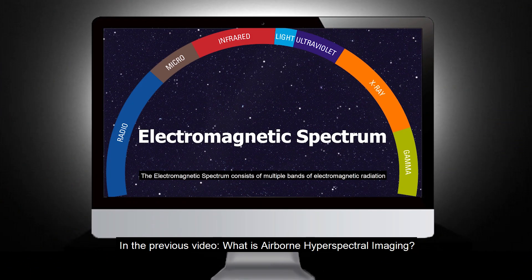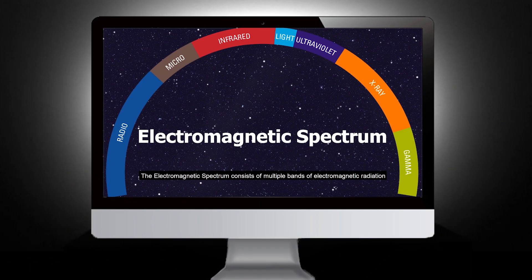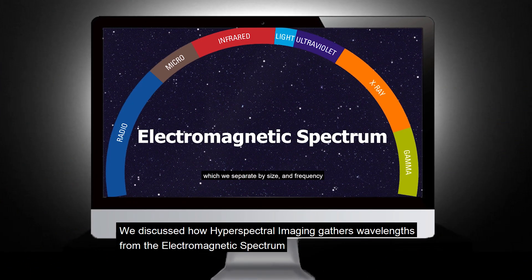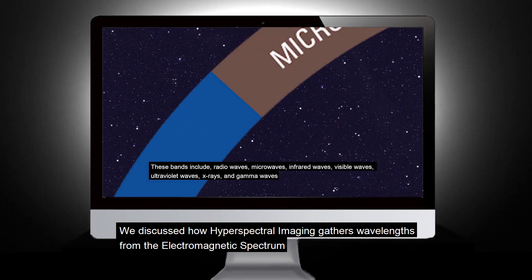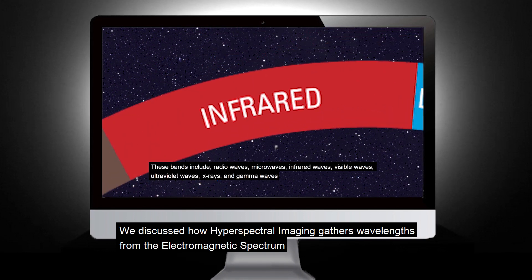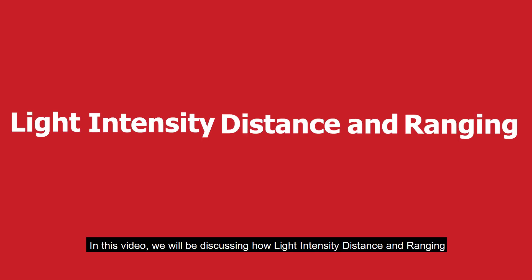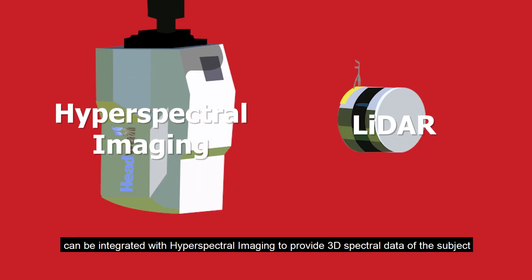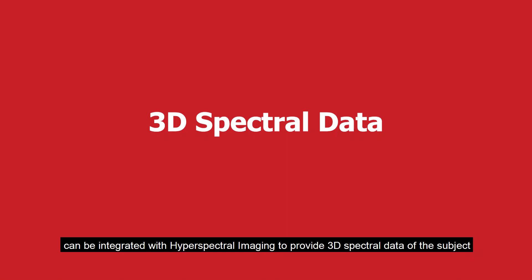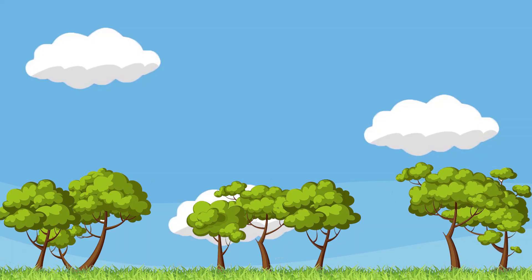In the previous video, 'What is airborne hyperspectral imaging?', we discussed how hyperspectral imaging gathers wavelengths from the electromagnetic spectrum to provide incredibly detailed data on the subject. In this video, we'll be discussing how light intensity, distance and ranging, otherwise known as LiDAR, can be integrated with hyperspectral imaging to provide 3D spectral data of the subject.